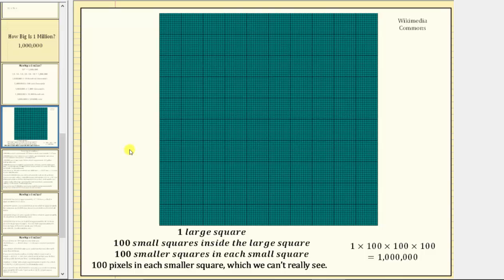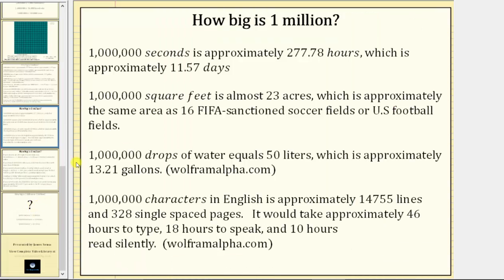Now let's take a look at other situations to better understand the size of one million. One million seconds is approximately 277.78 hours, which is approximately 11.57 days. One million square feet is almost 23 acres, which is approximately the same size as 16 FIFA-sanctioned soccer fields or U.S. football fields.